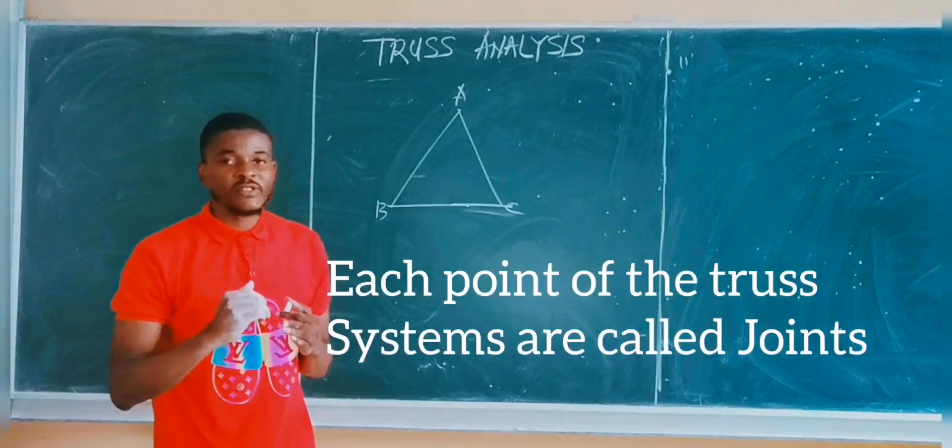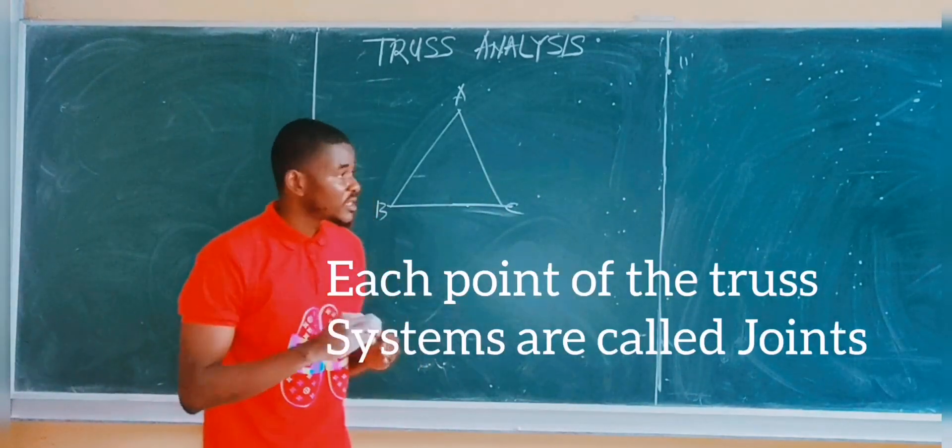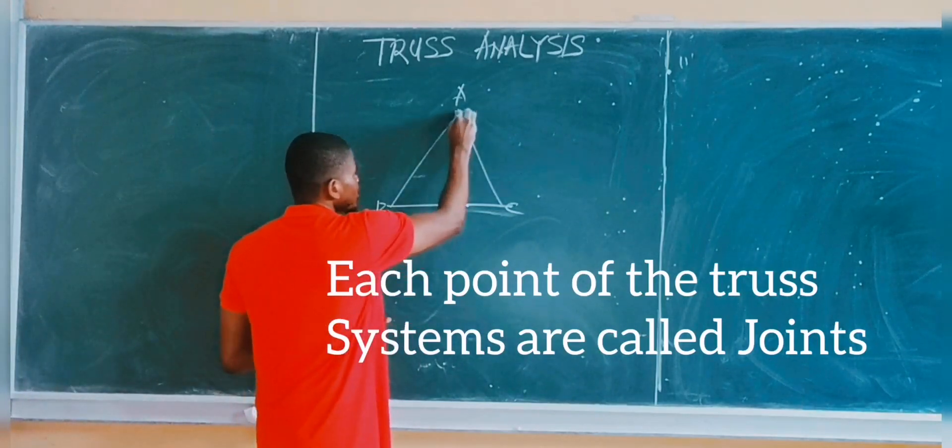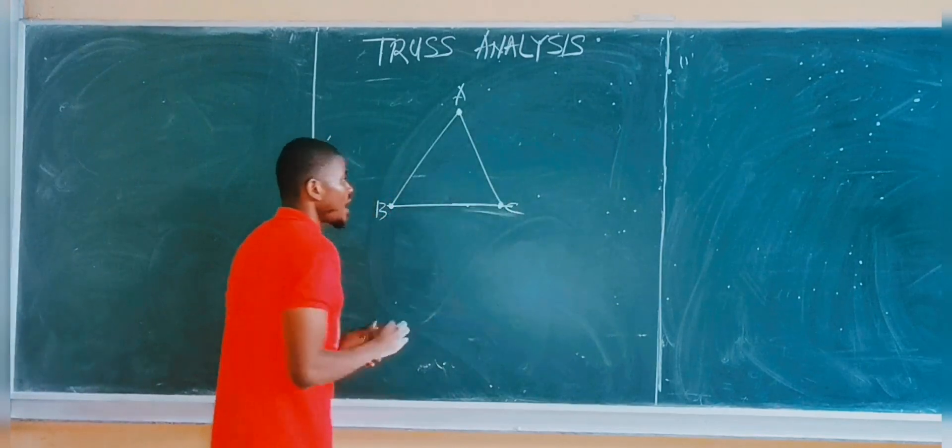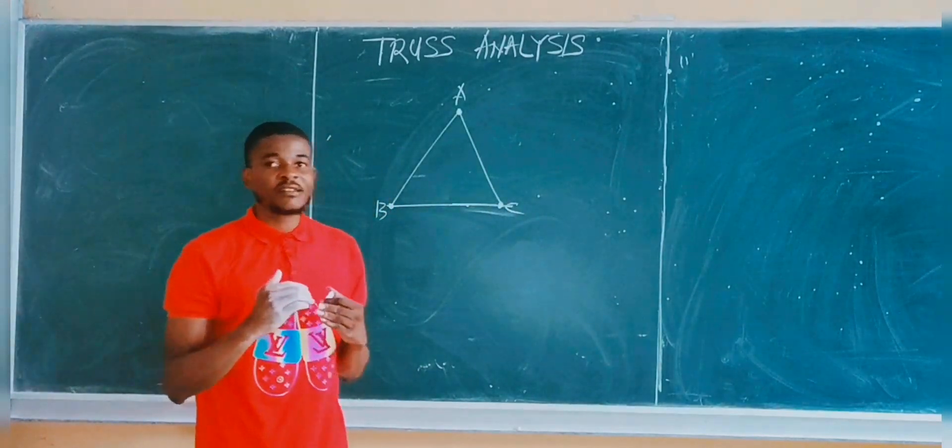Each point of the truss system are called joints. So this point A is called a joint, this is joint B, and this is joint C. And this truss carries axial loads.